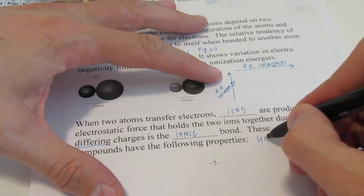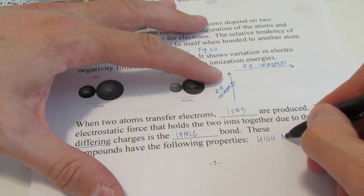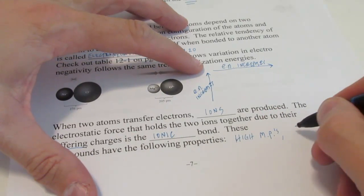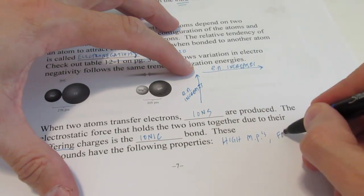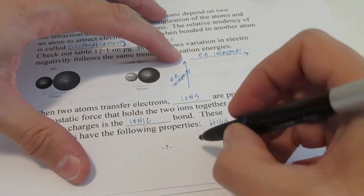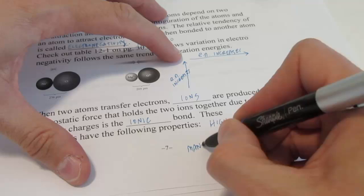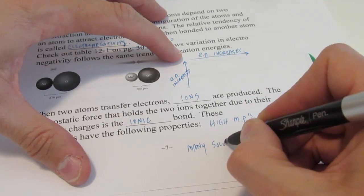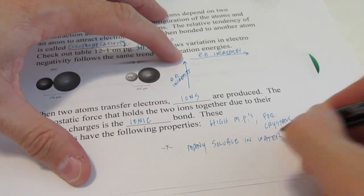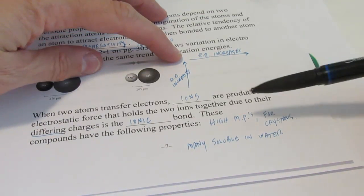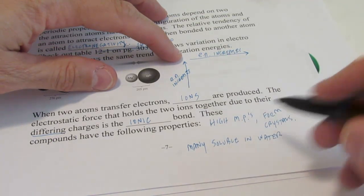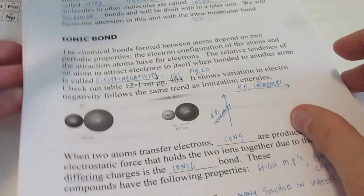They have high melting points. They often form crystals. And many are soluble in water. So the ionic compounds have high melting points, they form crystals, and many are soluble in water.